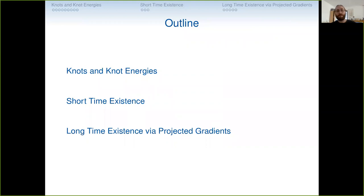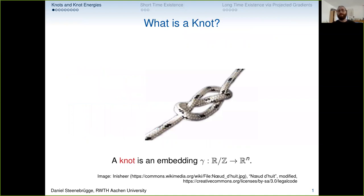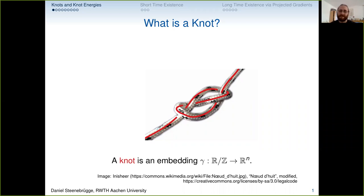Knots and knot energies: first question — what is a knot? Obviously that thing is a knot. You take a piece of rope, tie a knot in it, and you're done. Mathematically, a knot is an embedding from a model space — say the unit circle — into R^n. To connect these notions, let's lose the physical thickness and replace our knot by a line roughly in the same shape. The problem is I can still take an arbitrarily smooth transformation to map this knot into a straight line, so they are not really interesting as knots.